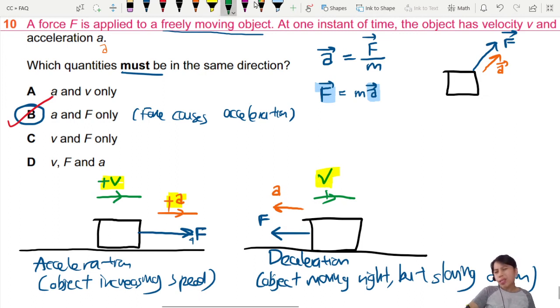Velocity is pointing to the right, so if we say to the right is positive, that means acceleration will be a negative number, like negative 9.81 or whatever that is. So this one is in the opposite direction. Similarly, force will also be a negative value.